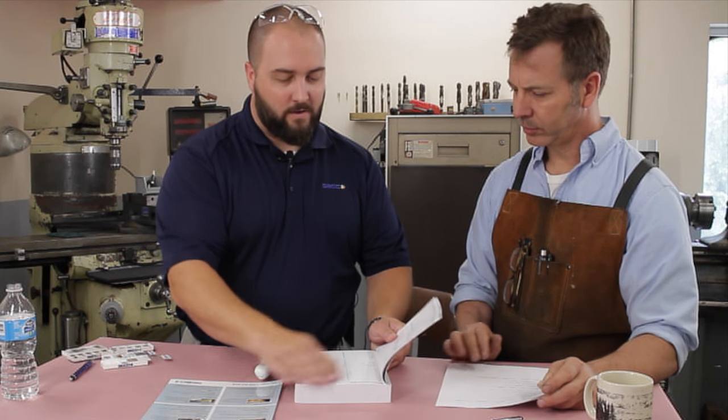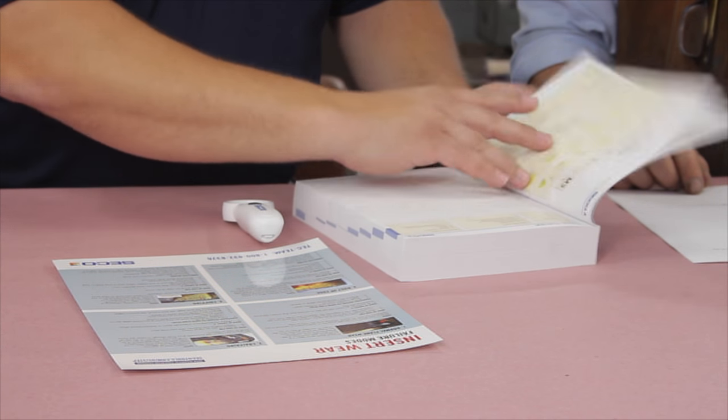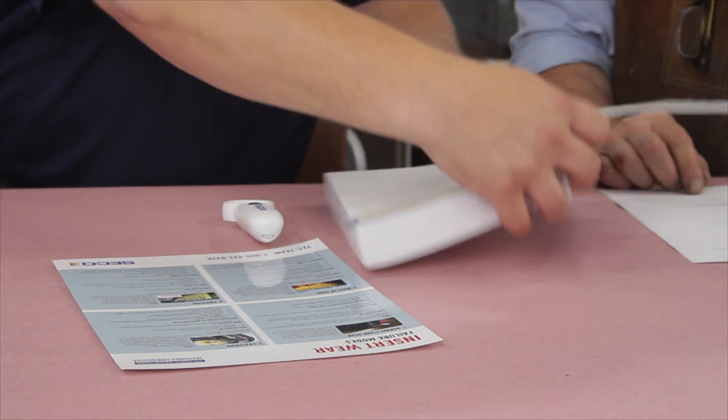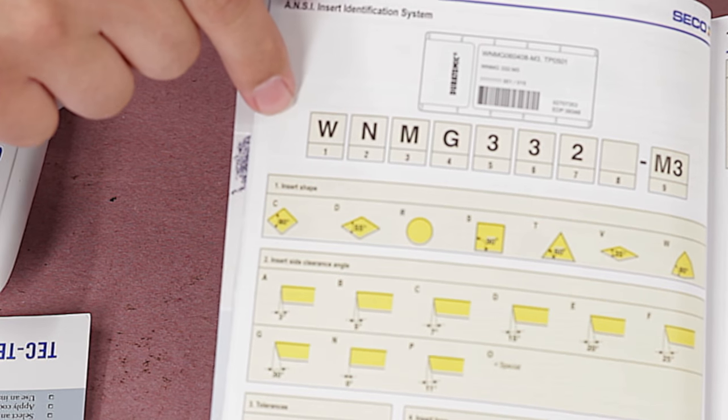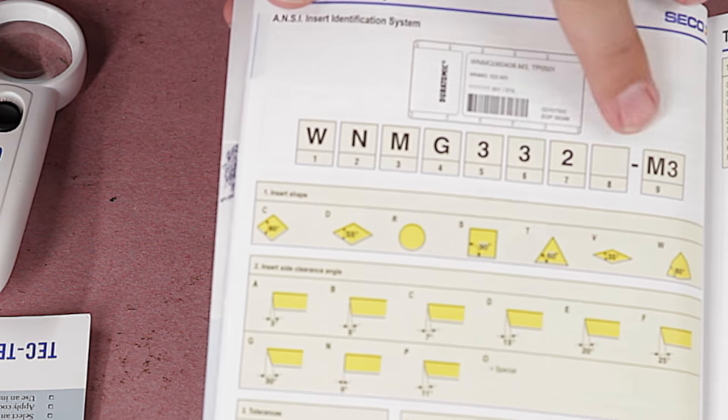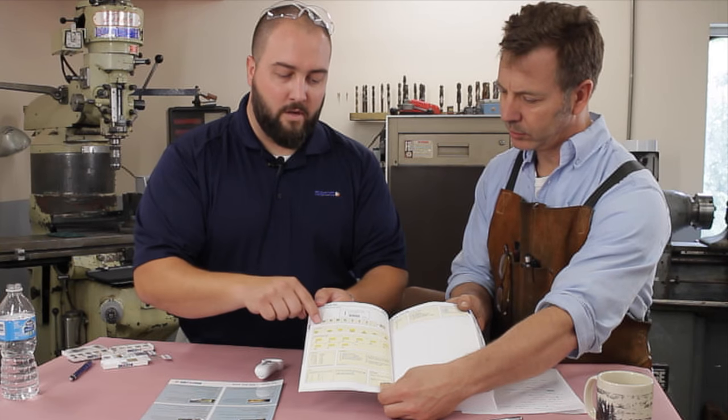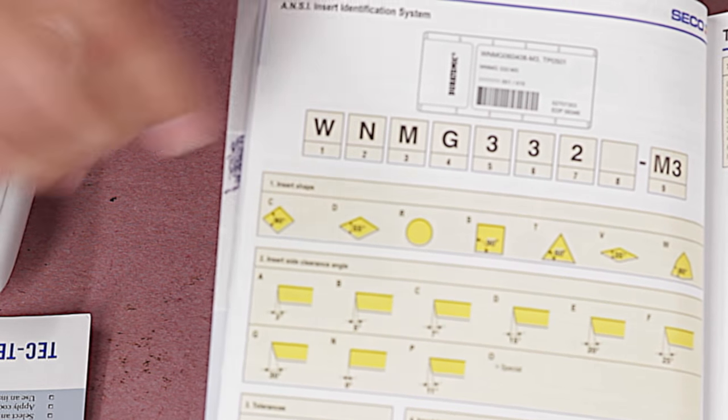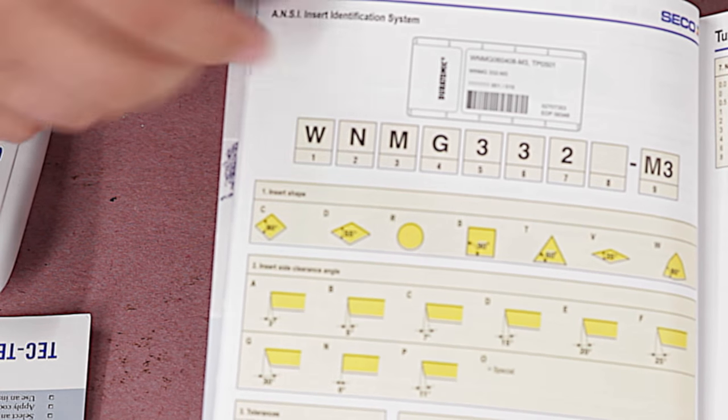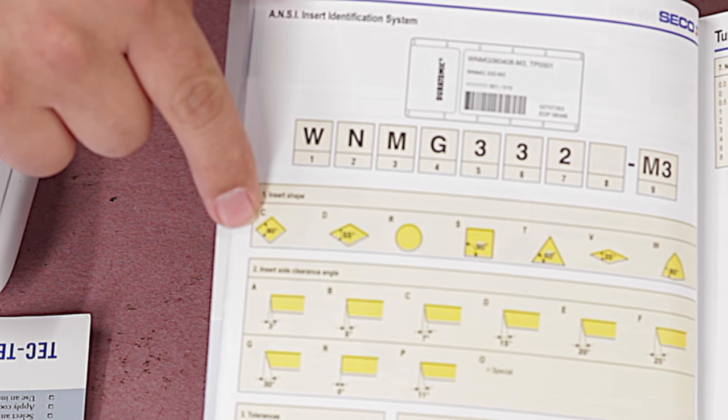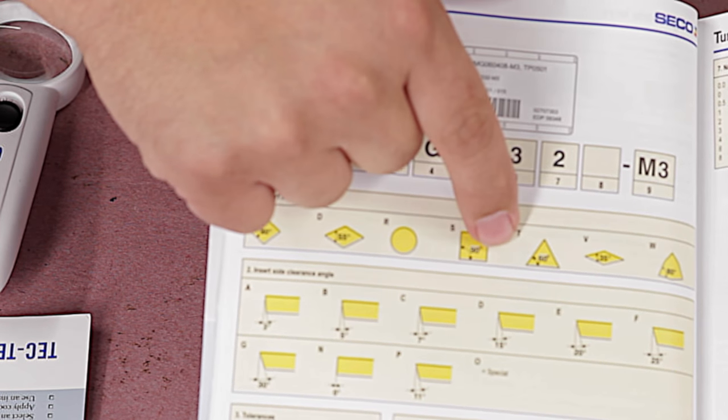What's in there between everything from nomenclature to machining practices, speeds and feeds. It's not only just a catalog of the products. It'll talk about insert grades, your holders, everything that pertains to turning. So this is kind of the Bible for us. I would say.